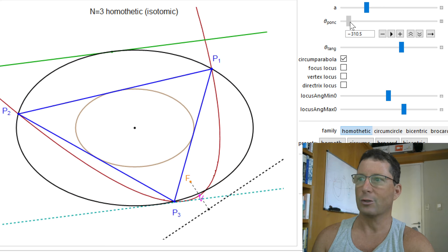OK, so in the next video I'm going to talk a little bit about isogonal images of tangents to the circumcircle, not to the Steiner ellipse. See you in the next video.